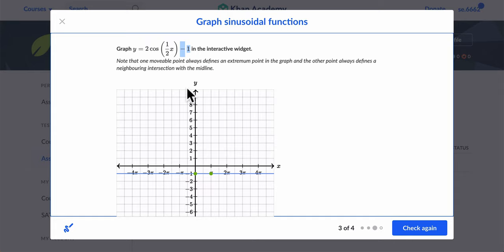So what does that mean? Well, here, in this case, the midline is at negative 1. It's a cosine function with an amplitude of 2. So here's my midline point, negative 1. I go up 2.